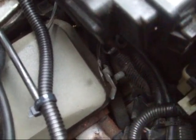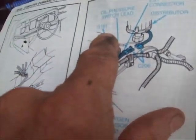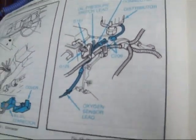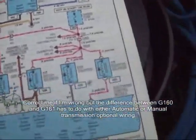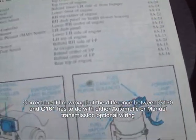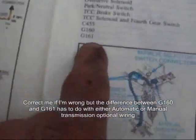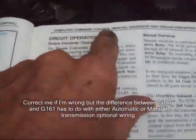It actually has two grounds attached to it. 129, which is important, and 161 is also grounded there. 161 is the electronic control module, 161 computer command control ground.